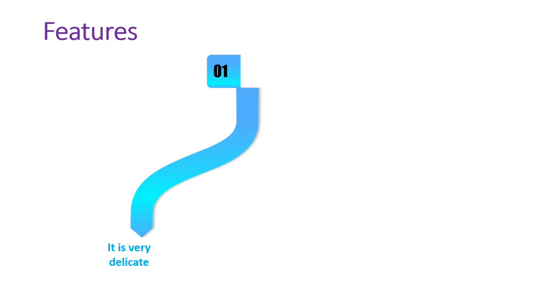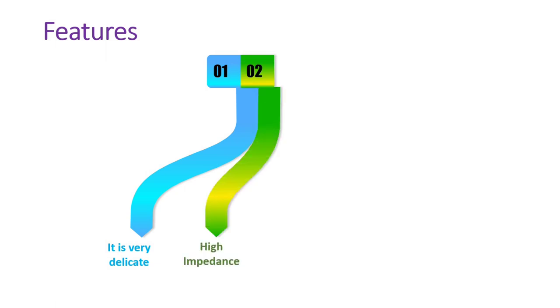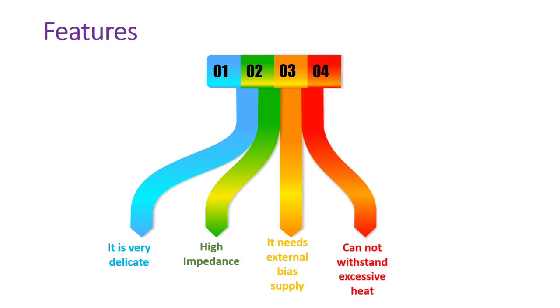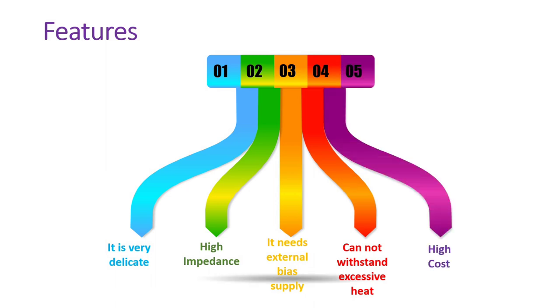Now let us see the features. It is a very delicate microphone and must be handled carefully. It has very high impedance — about 100 megaohms. It needs an external bias supply of 50 to 100 volts to function. It cannot withstand excessive heat from external connections, so that must be taken care of. Its cost is very high, as it is used in hi-fi systems.